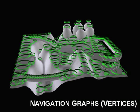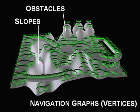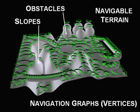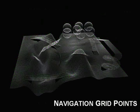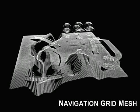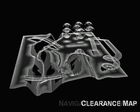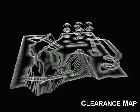Our crowd simulation is mainly based on navigation graphs, which capture environment topology by distinguishing navigable areas from impassable slopes and obstacles. Graphs are computed using an intermediate grid identifying flat locations, their interconnections, and their clearance to obstacles.